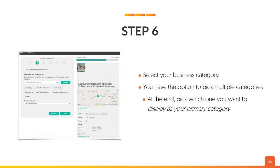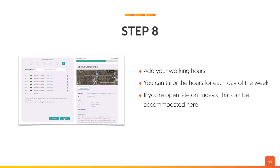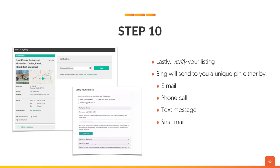Step six: select your business category. You have the option to pick multiple categories, and at the end pick which one to display as your primary category. Step seven: set up your contact details — make sure it's accurate and thorough. For social listings, place the full URL of your social pages, not your handle. On the right side of the screen you can preview what customers will see. Then add your working hours — you can tailor the hours for each day of the week. They're pretty flexible, just like Google. Make sure you add your logos, a snapshot of your storefront, examples of your products or services, and photos of your team. Then verify your listing — Bing will send you a unique PIN either by email, phone call, or snail mail.